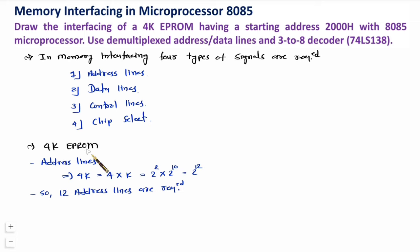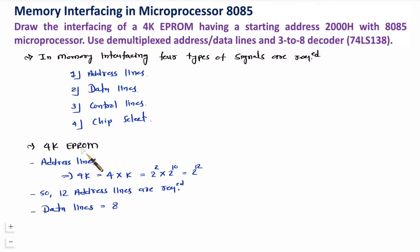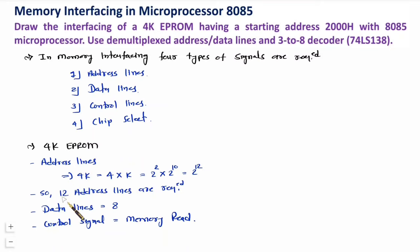The 4K EEPROM has 8 data lines. Since it is erasable programmable ROM — it is ROM — we need to interface the memory read terminal with it. So the control signal will be memory read only. We have now identified address lines, data lines, and control signals.